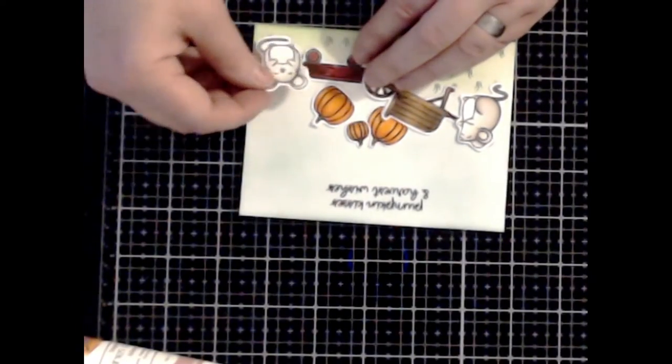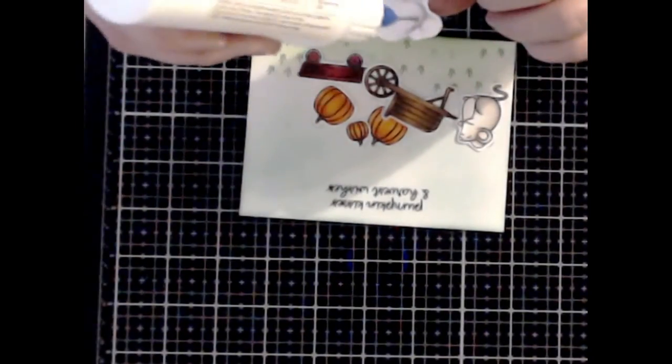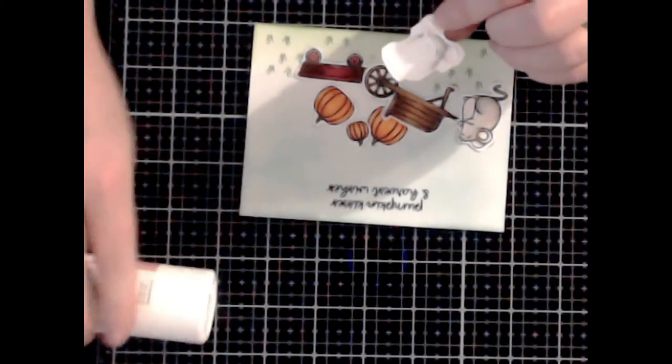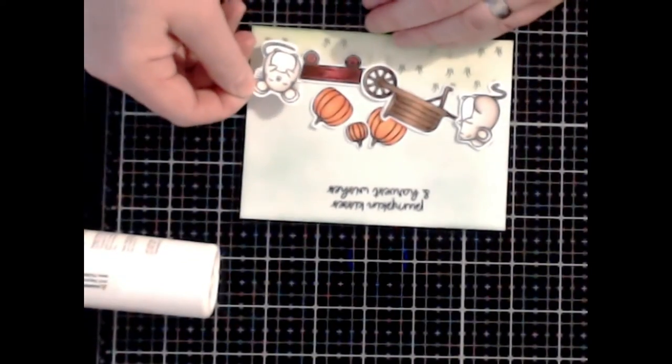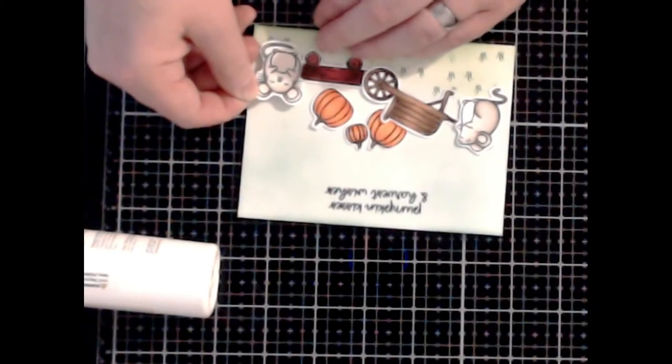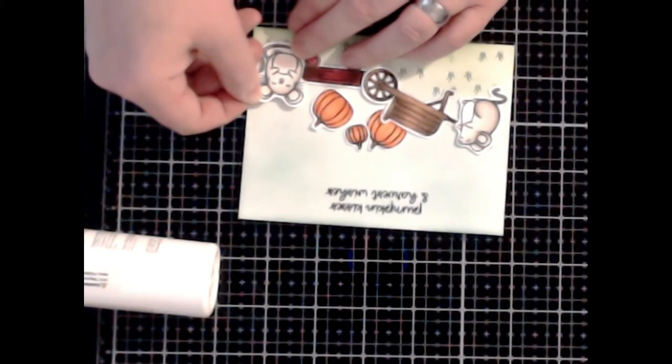You'll see my wagon was just a little crooked there, straighten it up. Now I'm going to put on the next cute little mouse and just place him there in front of the red wagon.